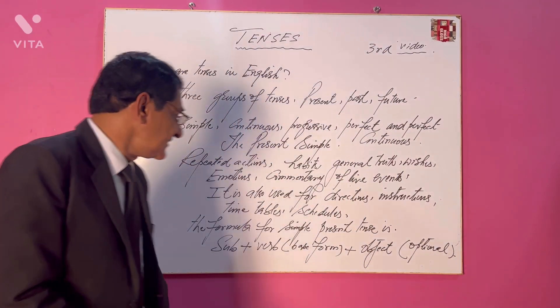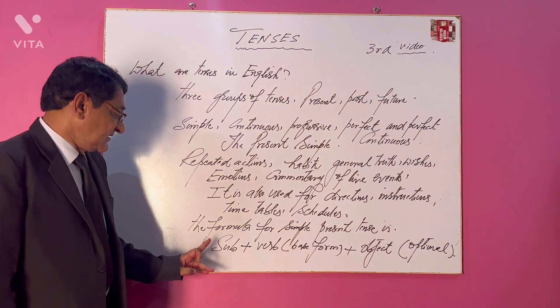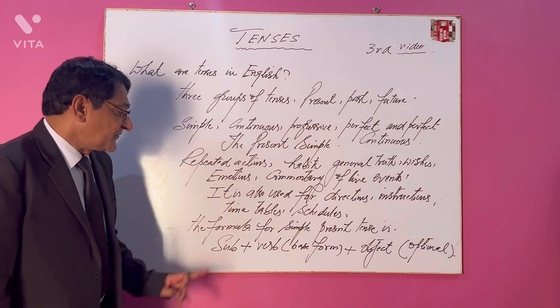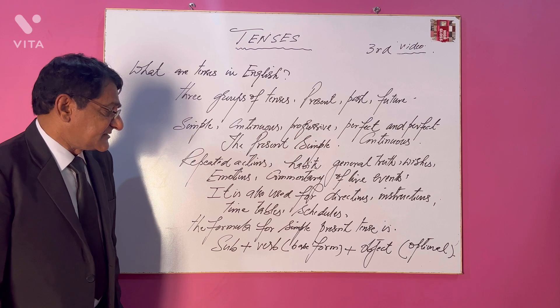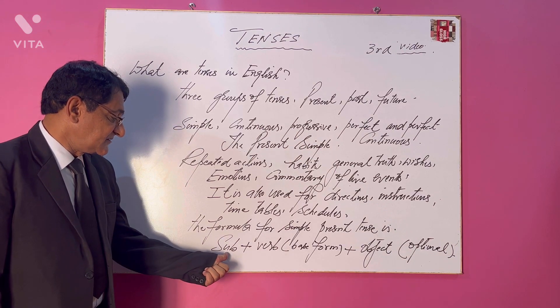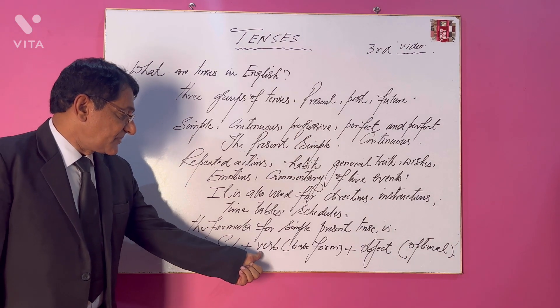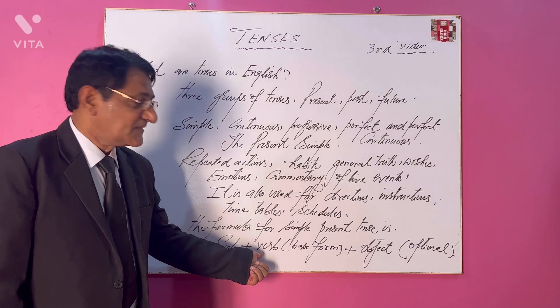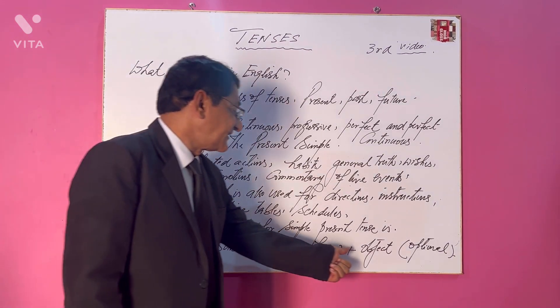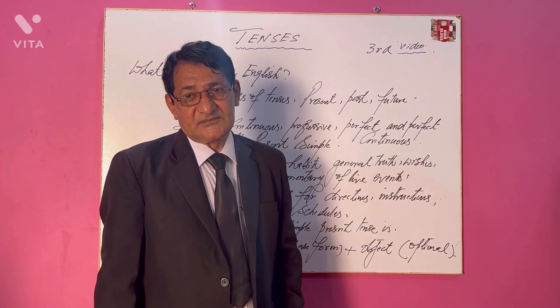Look at this example — the basic structure. The formula for simple present tense is: subject, verb in base form, and object. Object is optional.